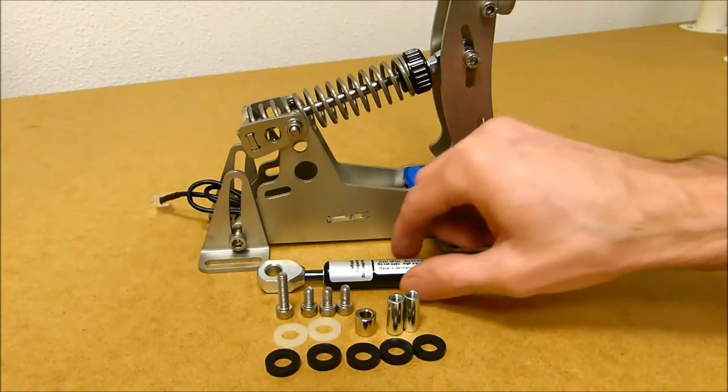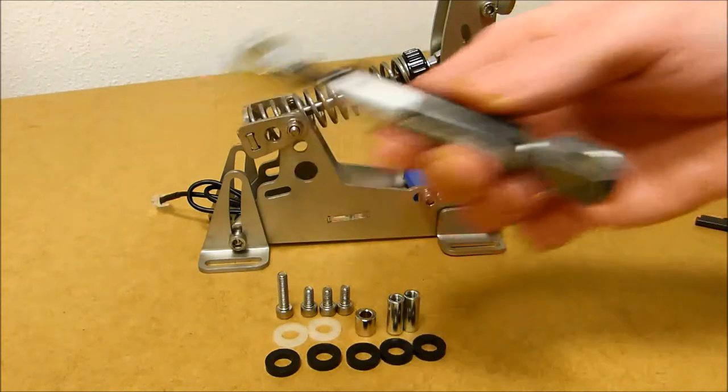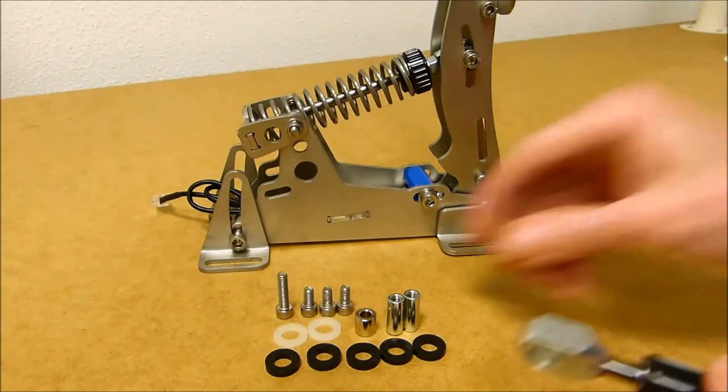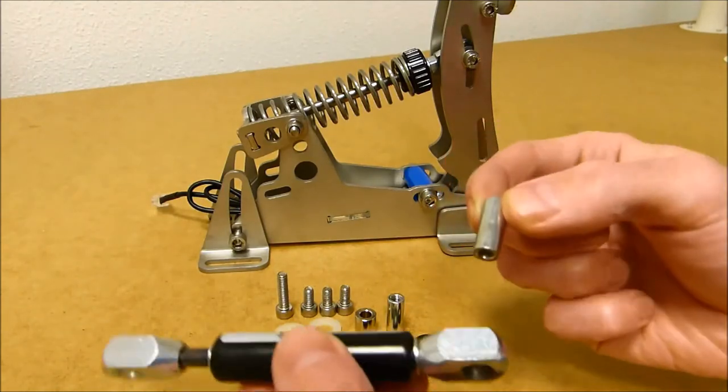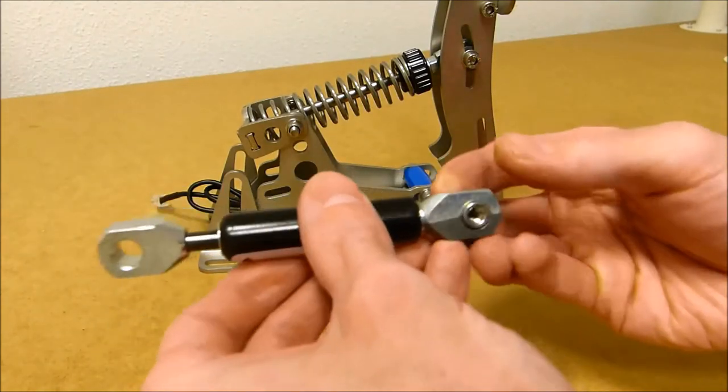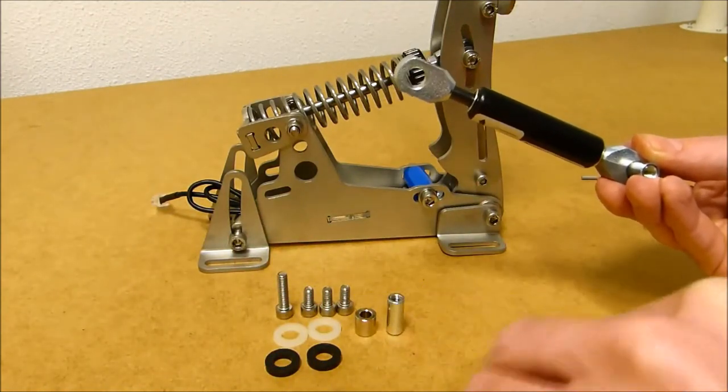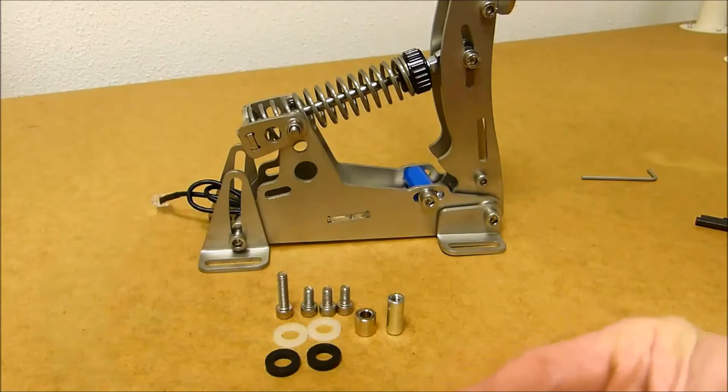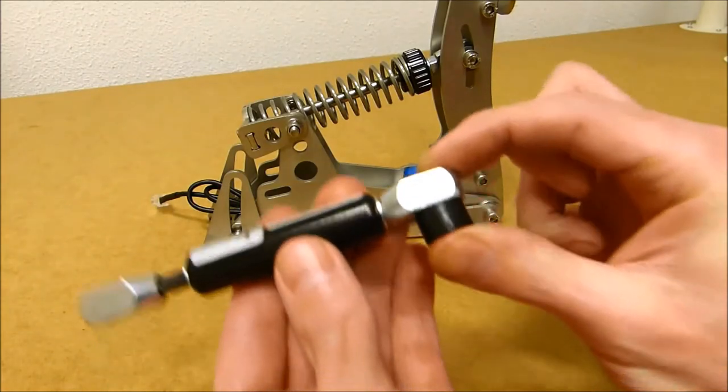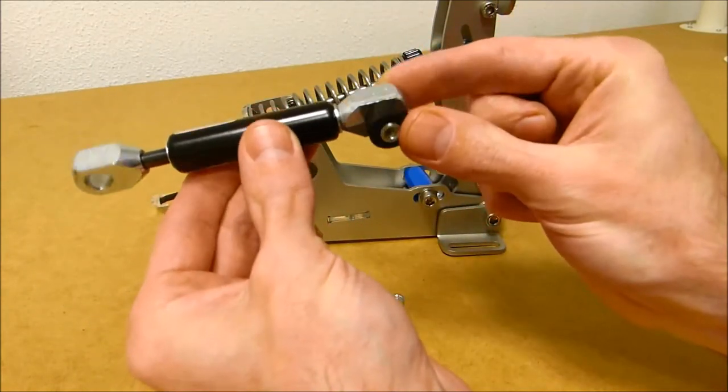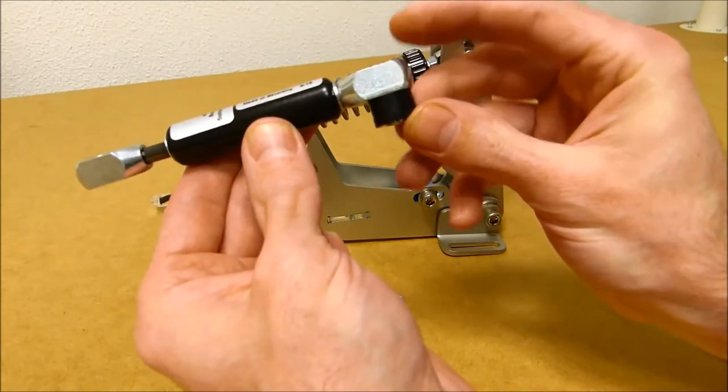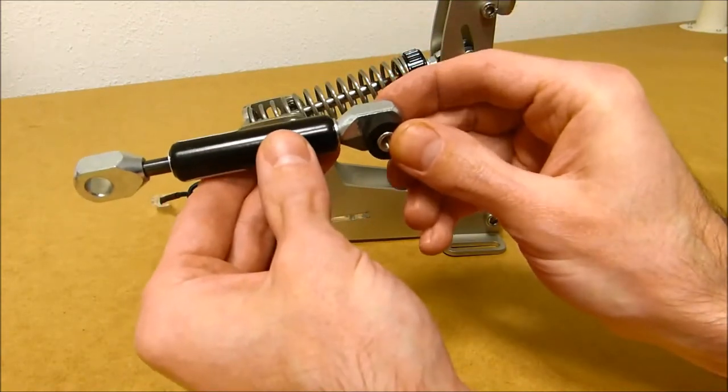First step, take the damper, the longer of the two threaded rods, insert that, and take three of the black washers like that. So you have a threaded rod with three washers on the back of the damper.